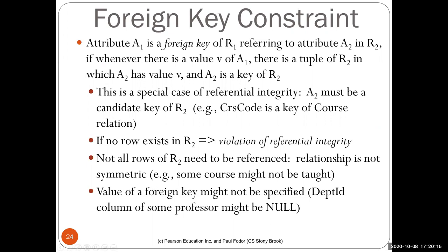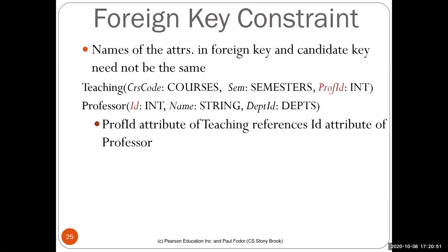The value of a foreign key might not be specified — for instance, the department ID for some professors might be null, since some professors are inter-departmental. Names of attributes in foreign keys and candidate keys need not be the same — in the teaching relation, the professor ID is a foreign key to the attribute ID in professor, so the names differ. Also, r1 and r2 need not be distinct — for example, in an employee table, the manager ID is a foreign key to the ID attribute of the same employee table. This is like a linked list where a node references another node of the same type.